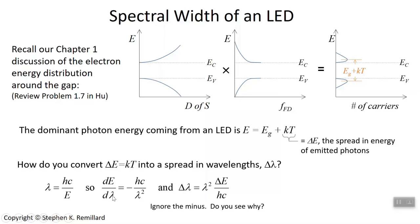So the width of the line in lambda is lambda squared times its width in energy over hc. That's the expression we will go with. For lambda, I'll just replace it with hc over energy.